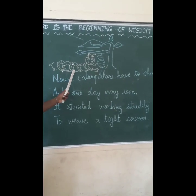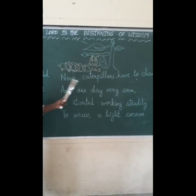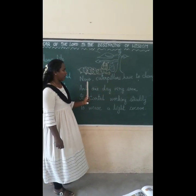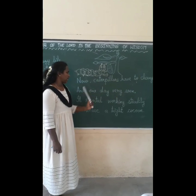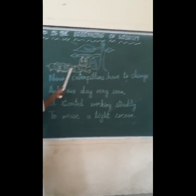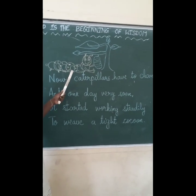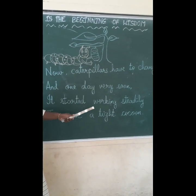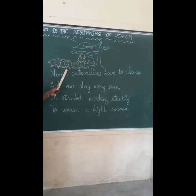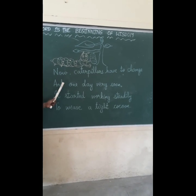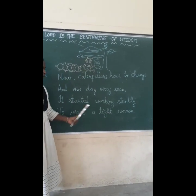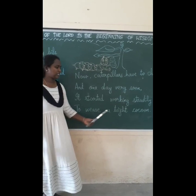Now you can see the caterpillar changing to its next stage. Caterpillars have to change, and one day very soon the next stage begins — the caterpillar changes its stage and goes into a pupa to weave a cocoon. It started working steadily to weave a silky cocoon.